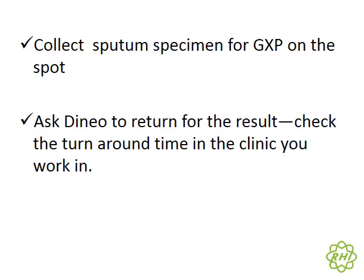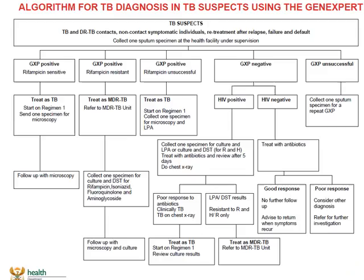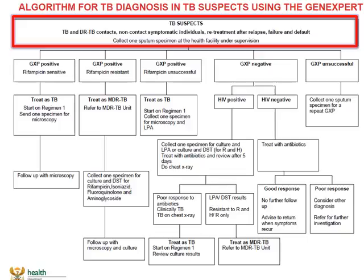We have a fairly straightforward guideline on the next step. We need to collect a sputum specimen for GeneXpert on the spot, and we need to make sure that Dynia returns for the result and is well counseled that this is not the end of the consultation. In terms of screening for TB, the GeneXpert algorithm has been around for about two or three years now, so most people are quite comfortable using it. All TB suspects — we now collect a sputum for a GeneXpert.